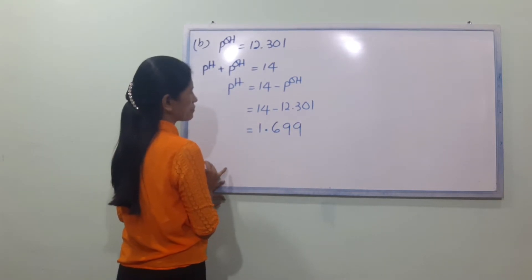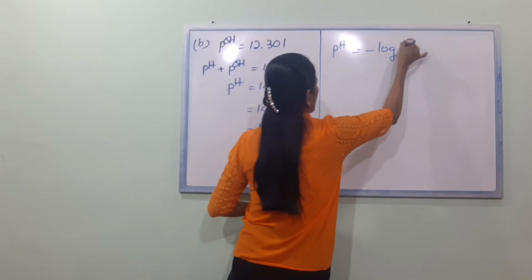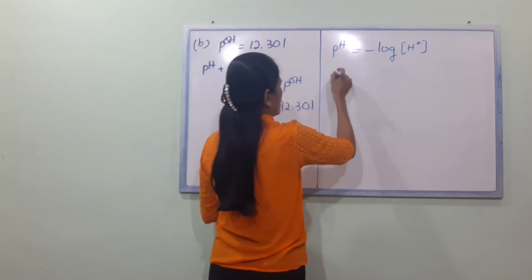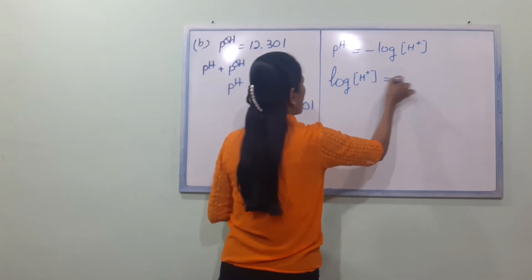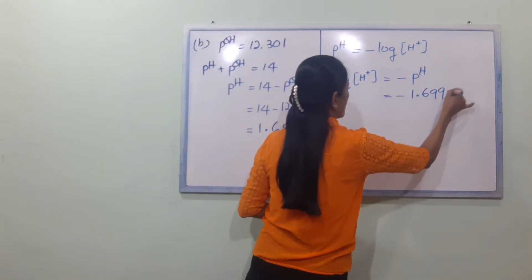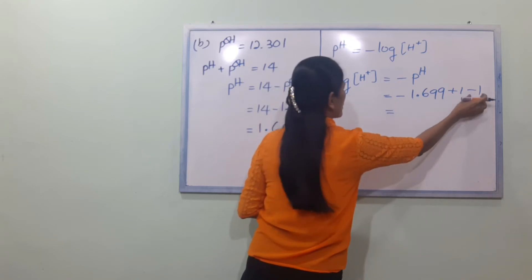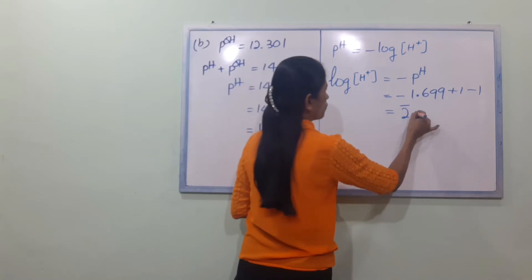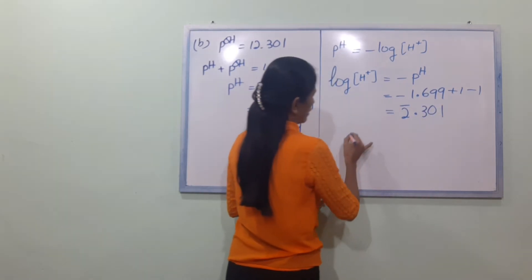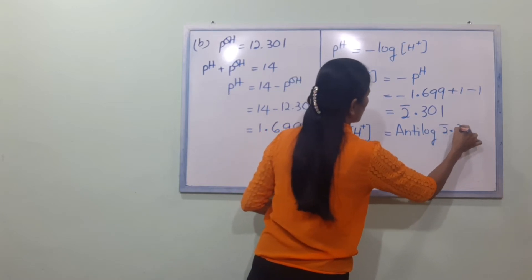1.99 is the solution. pH equal to minus log H plus ion concentration. pH is 1.99, so minus log H plus ion concentration equals 1.99. Minus 1 minus 1, so plus one is zero point nine nine. Zero point nine nine three zero one. Minus one three zero one.